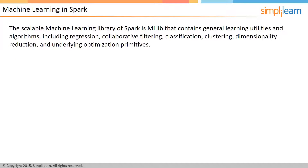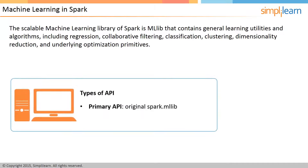The Scalable Machine Learning Library of Spark is MLlib. It contains general learning utilities and algorithms, which include regression, collaborative filtering, classification, clustering, dimensionality reduction, and underlying optimization primitives. There are two types of API available: the primary API is the original spark.mllib library API, and a higher-level API to construct machine learning workflows is the pipeline's spark.ml.